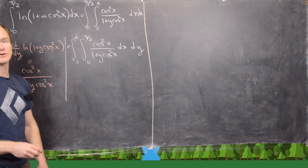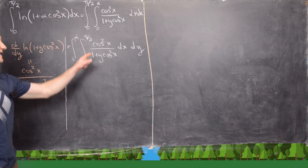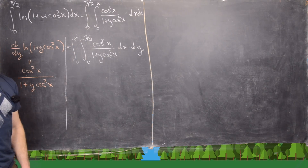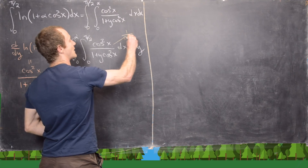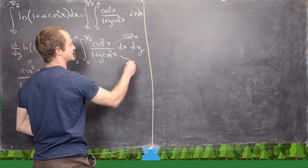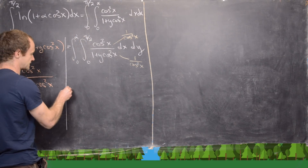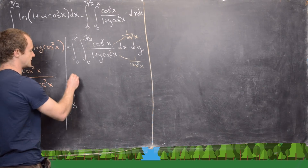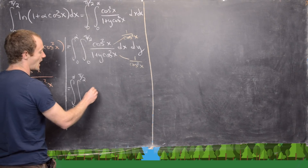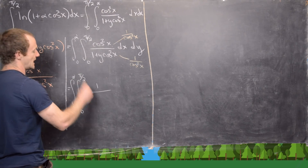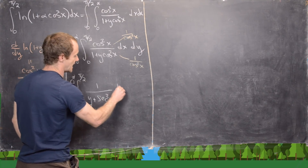Now we want to focus on the inner integral, and this relies on a couple of tricks. The first is to divide out a cosine squared in the numerator and the denominator — multiplying both by 1 over cosine squared. That gives the integral from 0 to α, integral from 0 to π/2, of 1 over y plus secant squared x, dx dy.